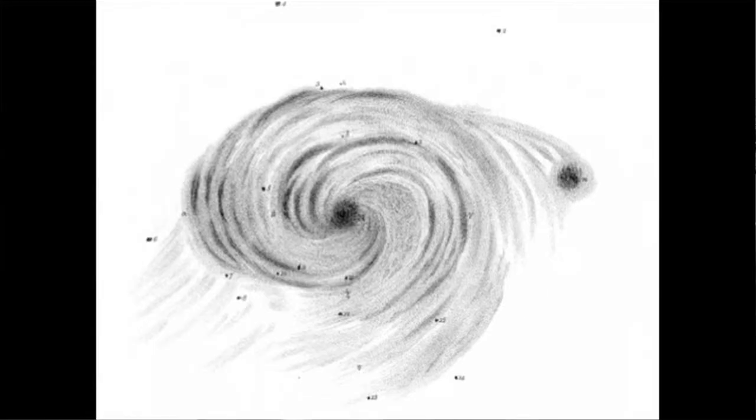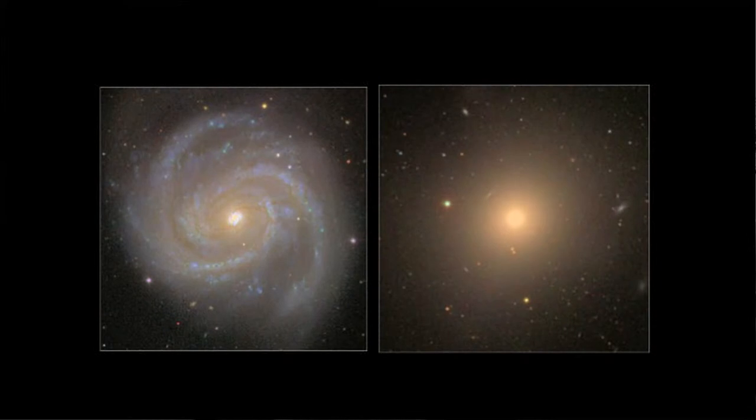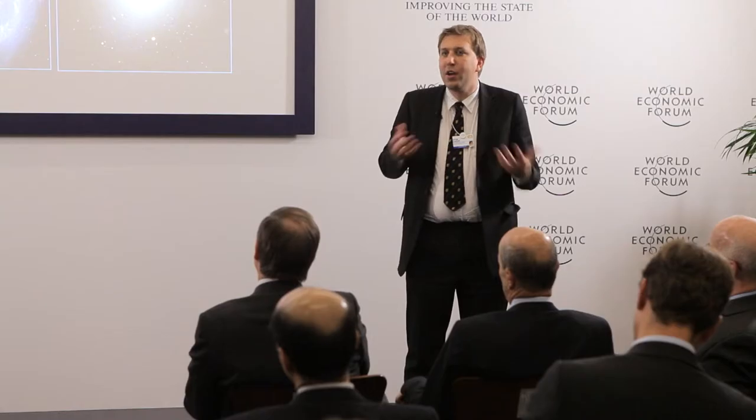I'm an astronomer, and I wanted to start by reminding you what data used to look like in my field. It wasn't long ago that this was cutting edge — a sketch carried out over a couple of nights by a man probably wearing a top hat. We still study these things in much the same way. We take pictures, but the measurements we want to make are necessarily simple. We can't go and prod these things, so we ask questions like: what shape are these galaxies? The shape of a galaxy tells you about its history — whether it's collided with other systems, whether stars have formed, and how those stars are moving.